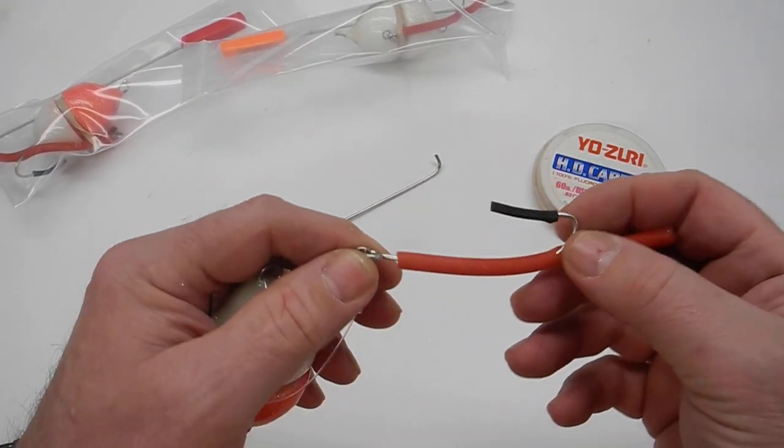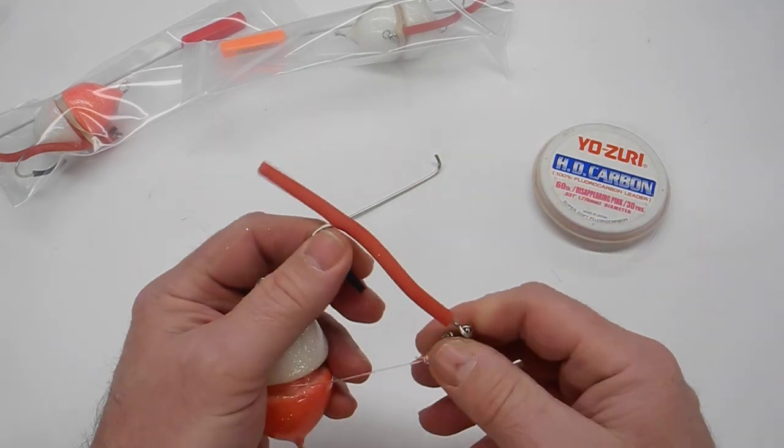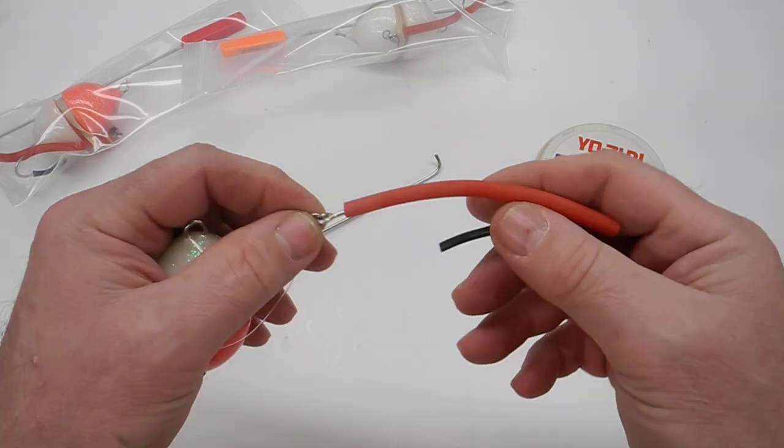it's going to have a limerick hook with a red tube, and this red tube is going to simulate a cinder worm.